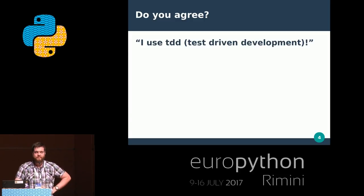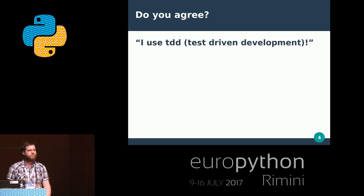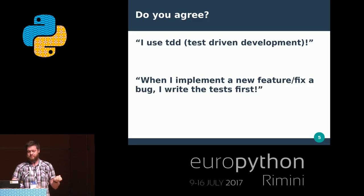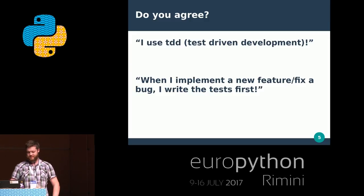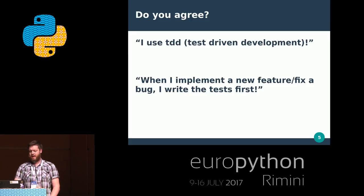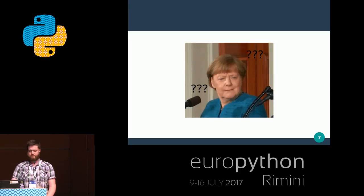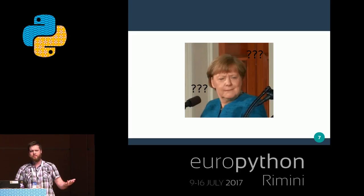Two statements — raise your hand if true. First: 'I use TDD.' Okay, not everyone. Now keep hands up and take them down if you don't agree with the next: 'When I implement a new feature or fix a bug, I write the test first.' Some hands going down. Quite often you hear people say 'I'm doing test-driven,' and then when you ask about a new feature they say 'it's all done, I just need to write the tests.' You're not doing test-driven development — you're doing development-driven testing. It's still good, you still have unit tests in the end, but it's not really helping your development.